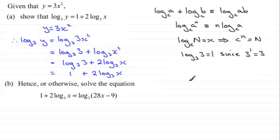Well, 1 plus 2 log of x in base 3 was the result that we got here. That's exactly the same as saying that it's the same as the log of y in base 3. So what we're going to do here is write the left-hand side here as the log of y in base 3. And it equals the right-hand side here, the log in base 3 of 28x minus 9.